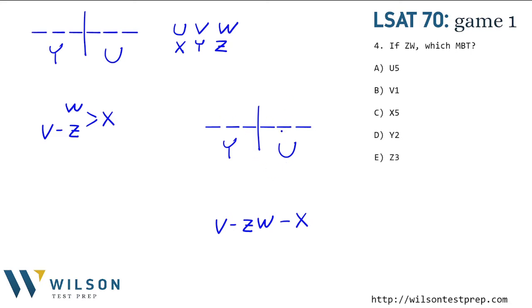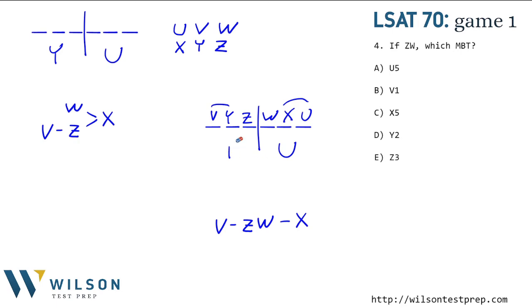There are a lot of ways to arrange this, but let's notice: I can't have V, Z, and W all in the first half, because then there'd be no room for Y. And I can't have Z, W, and X all in the second half, because there'd be no room for U. So this ZW block can't be entirely in the first half or entirely in the second half. It has to be split — Z in the third spot and W in the fourth spot — so we have room for both V and Y in the first half, and X and U in the second half. So V and Y go in spots one and two (order unknown), and X and U go in spots five and six (order unknown).